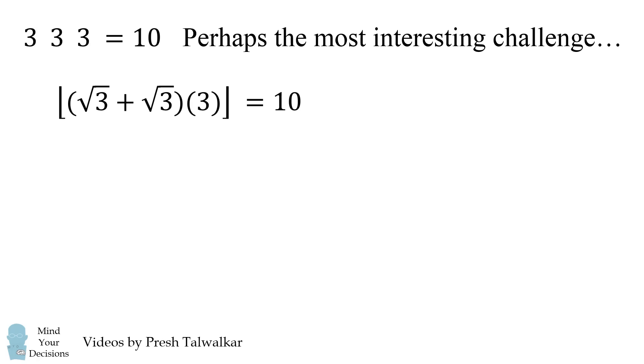Another way that you can solve this is you take the square root of 3 plus the square root of 3. You take that quantity multiply it by 3. That'll get you to a number that's slightly larger than 10. So you then take the floor function or round down to get to 10. I saw this on the website Cut the Knot 3 3's.